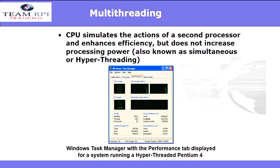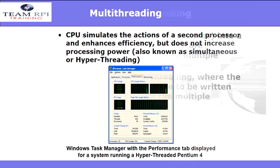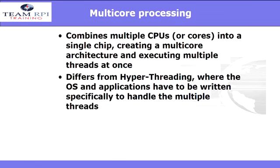Now let's move to multi-threading. Multi-threading is when the CPU simulates the actions of a second processor — it enhances efficiency but does not increase processing power. You might have heard this referred to as hyper-threading. Now, the difference from hyper-threading: we move to multi-core processing, where we've put multiple processors into a single chip.